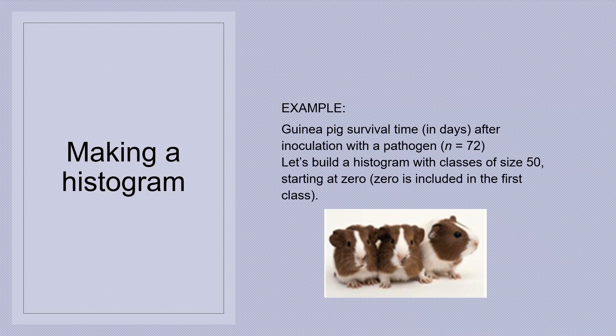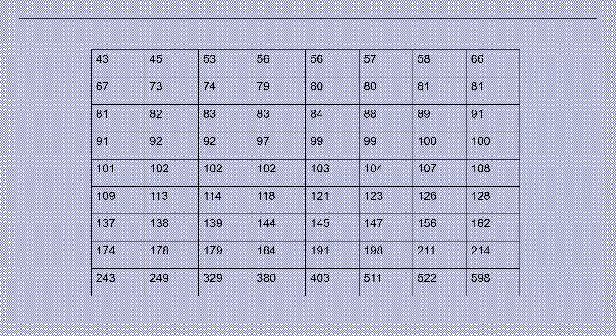Let us try to understand the histogram very clearly. Let us take this example. We have 72 guinea pigs, and the survival time of 72 guinea pigs will be given. We are expected to construct a histogram with a class size of 50 starting from 0, with 0 included in the first class. Those 72 values are given in this table. So it is already arranged. The minimum is 43 and the maximum is 598. We are asked to construct a histogram with a class interval of 50 where 0 is included in that first interval.